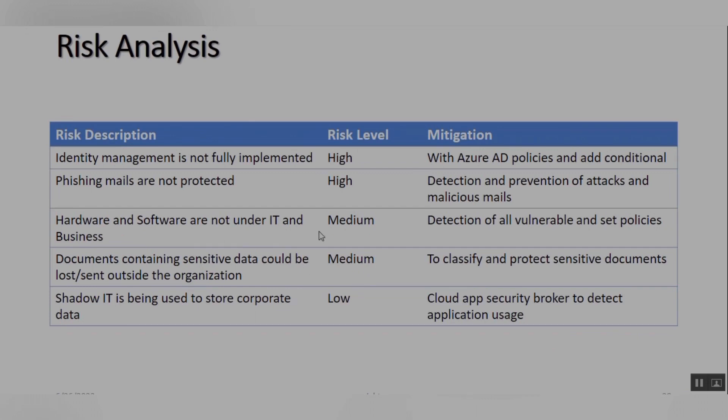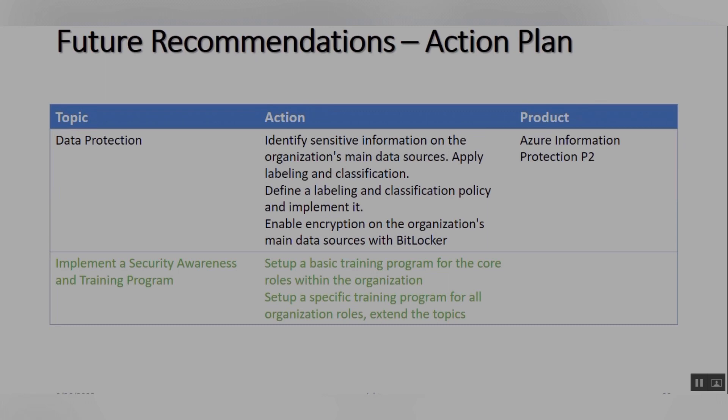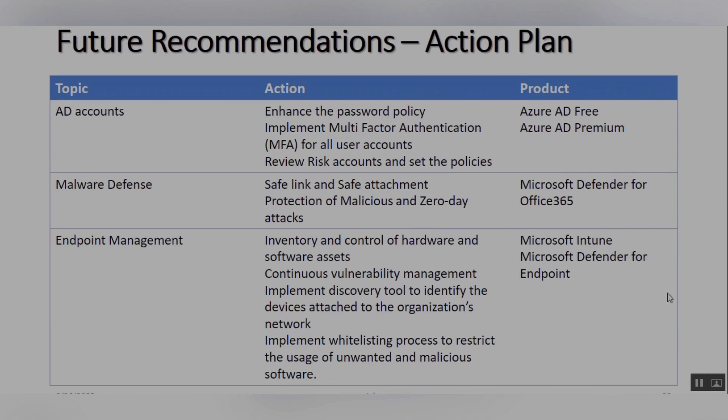You can also see the Forwarding Message Report. From the reports, we can easily define what the risk descriptions are, what the risk levels are — high, low, or medium — and what the remediation steps look like. Finally, the security administrator can provide a security roadmap with future recommendation action plans, including what actions to take and what products should be used. That's all for my Microsoft security assessment process sharing video. Thank you for watching to the end — please subscribe to my channel, as your subscription is my motivation to make more sharing videos. Bye!